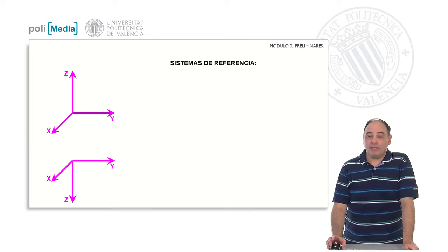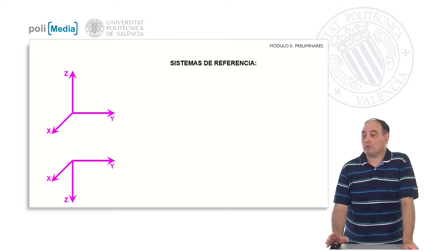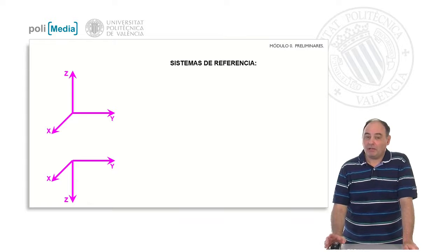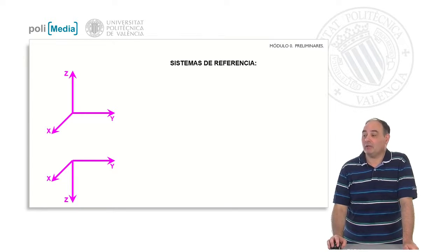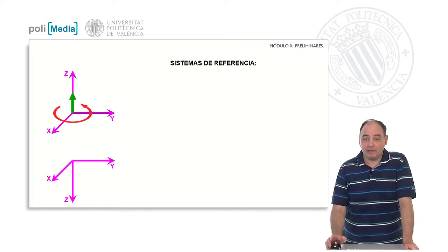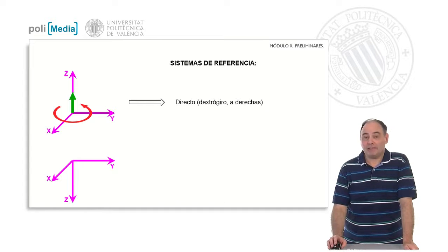As for the reference systems, as a preliminary step, they can be categorized into two large groups, considering that we have an orthonormal reference system — basically that the three coordinate axes are perpendicular to each other. All can be separated into two subsets. The one above meets the following criterion: rotating from the x-axis to the y-axis, the direction provided by Maxwell's rule coincides precisely with the z-axis. Those that meet this rule are known as direct, dextrorotatory, or right-handed systems. From now on, we will simply say direct.